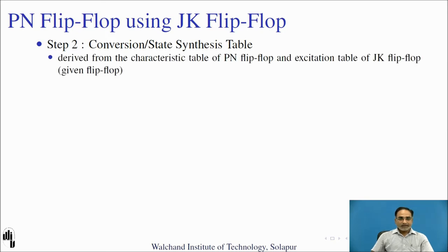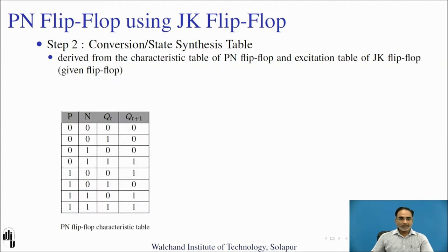This conversion table is derived from the characteristic table of the PN flip-flop and the excitation table of the JK flip-flop. From the PN characteristic table: for PN=00, present state 0 → next state 0; present state 1 → next state 0. For PN=01, present state 0 → next state 0; present state 1 → next state 1. For PN=10, present state 0 → next state 1; present state 1 → next state 0. For PN=11, present state 0 → next state 1; present state 1 → next state 1.